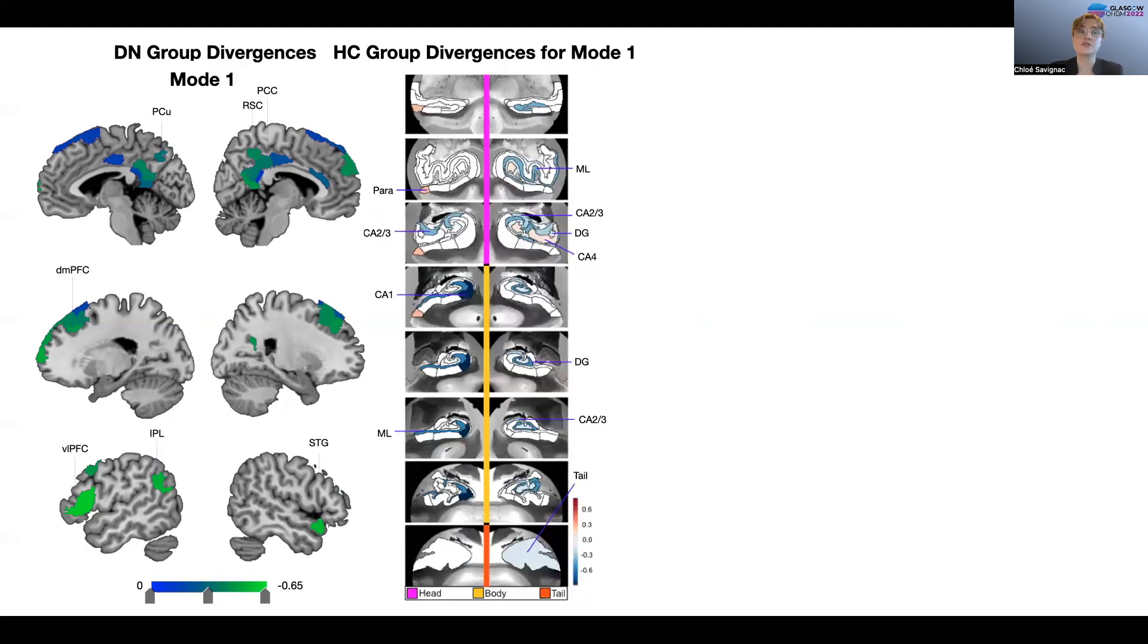On the hippocampus side, we see that the strongest weights are related to the CA1, CA2, CA3, and molecular layer. The molecular layer is where the axons of the CA fields are located.